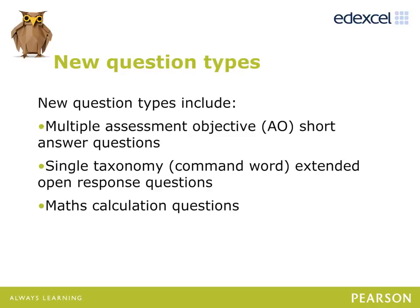There are new question types in the 2015 psychology specification that were not in the legacy 2008 specification. The first are short answer questions which can be assessed using multiple AOs. For example, a question could have a mix of AO1 and AO3 if it asks for a strength of a study or theory. The AO1 mark will be for identification of the strength and the AO3 mark will be awarded for justification of the strength.